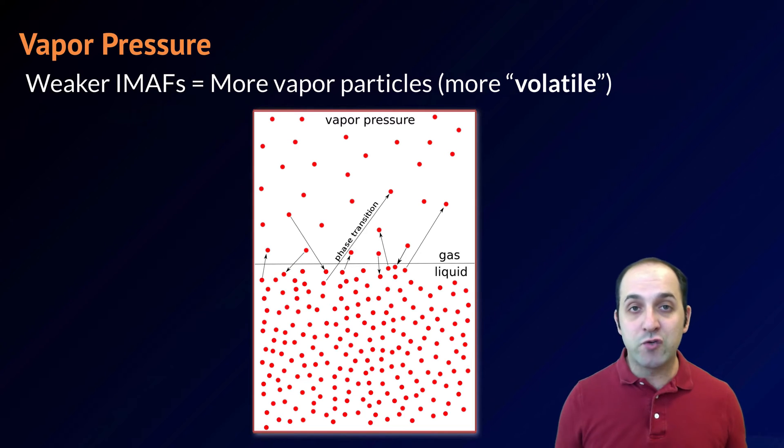The weaker the intermolecular attractive forces are in that substance, the more particles will exist as a vapor at any particular temperature within our closed container. Substances that evaporate easily and contribute more particles to the overall atmosphere of whatever they're in are described as volatile substances.